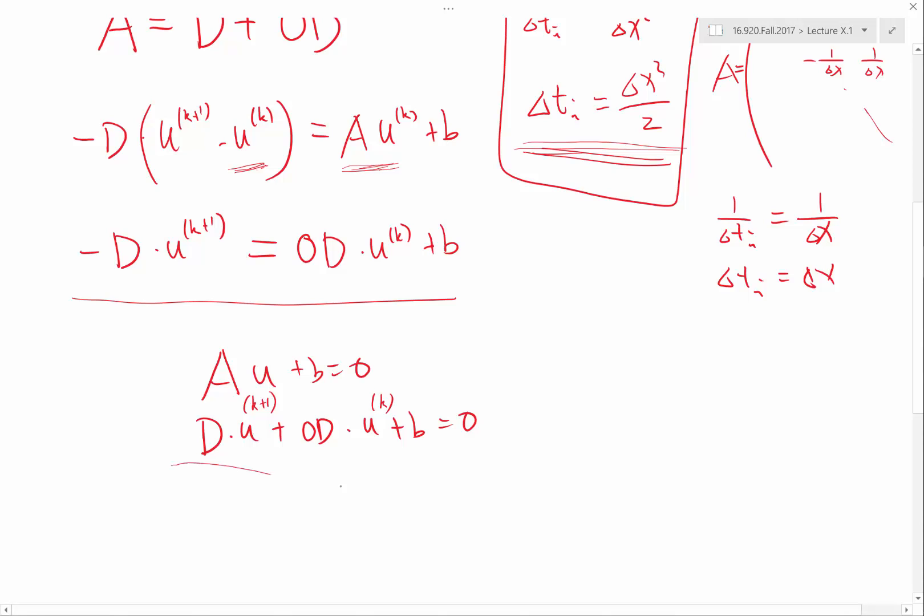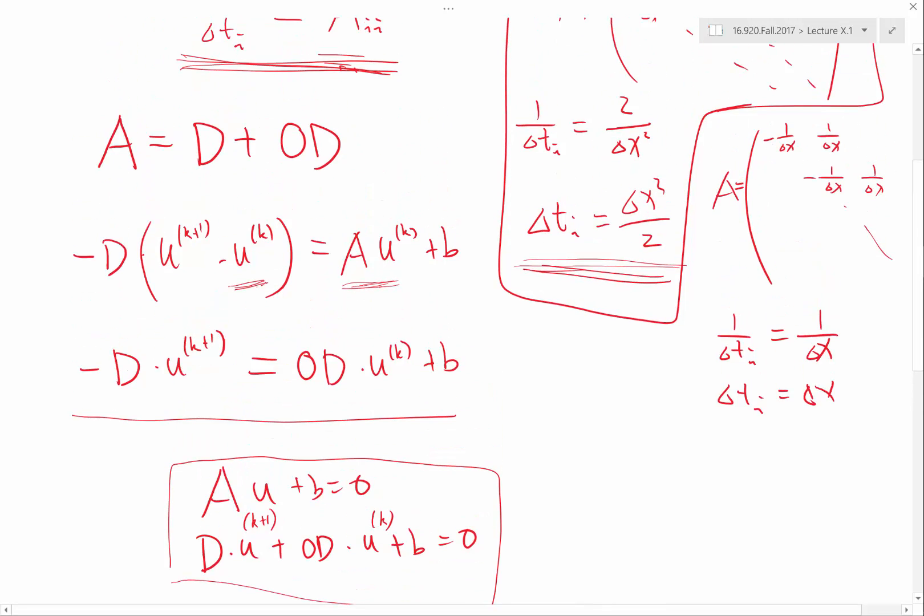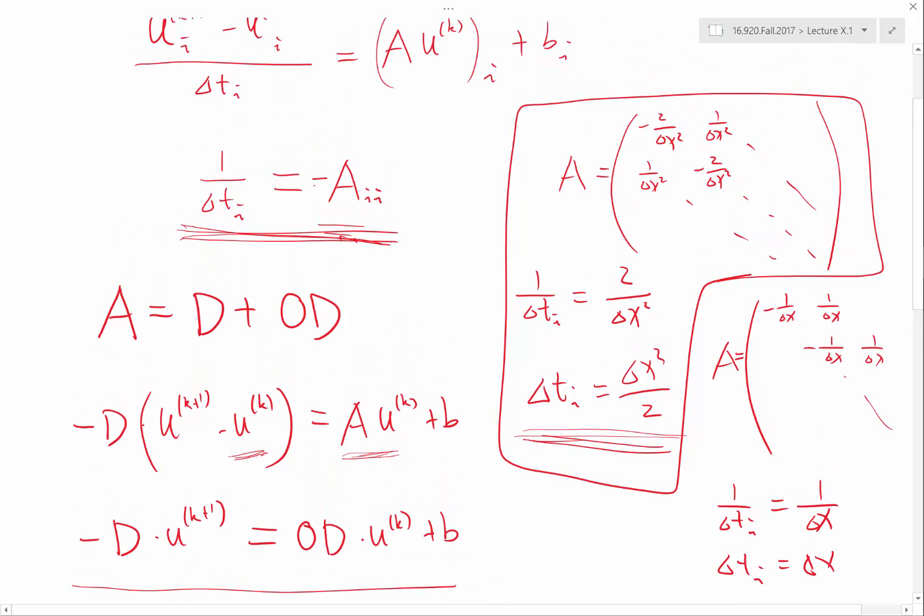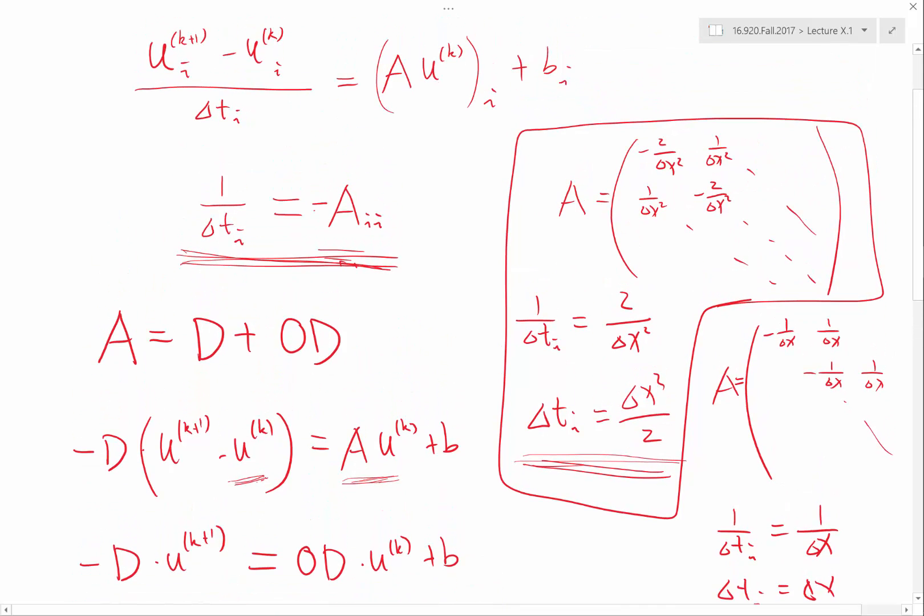But this is how a lot of places introduce the Jacobi iteration, but it feels a little bit like why, right? And so coming from the time integration, I think it's a lot more intuitive way of deriving the Jacobi iteration.